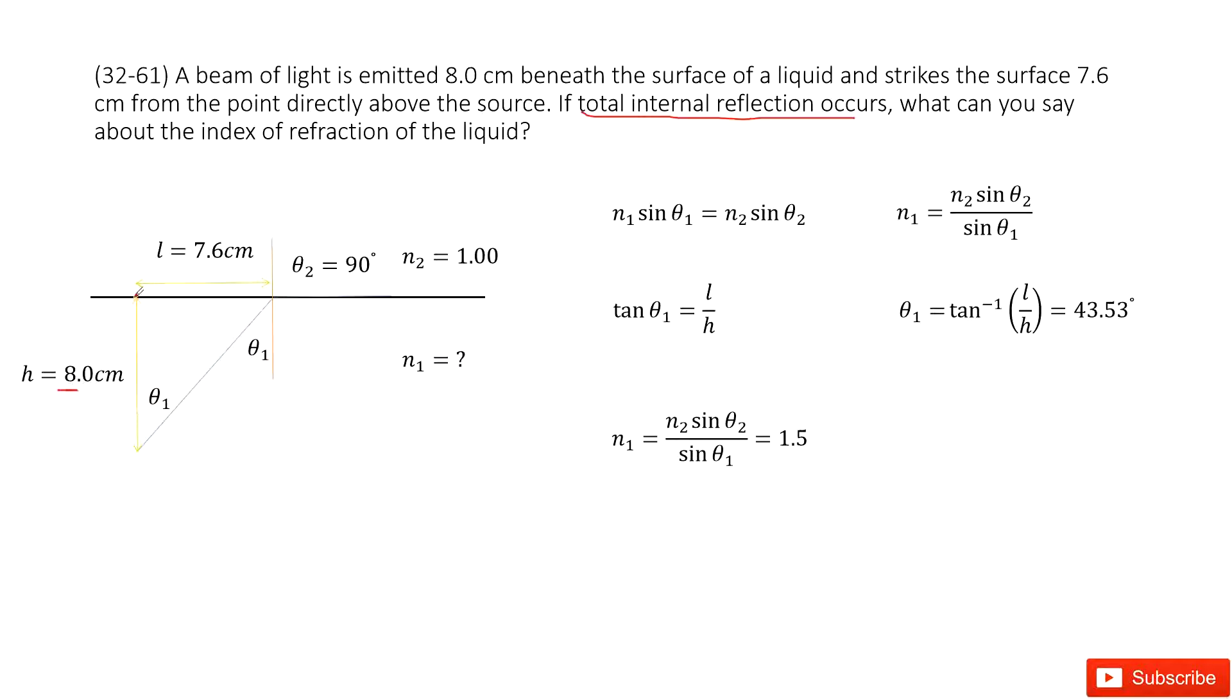And from the location where the light source is to where it strikes the surface, this length L is 7.6 cm. And also we know this is total internal reflection. So θ2 is 90 degrees. And it strikes to the air. So that tells us the N2 as 1.